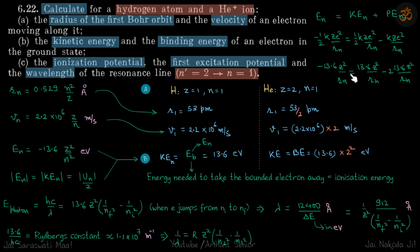The radius of the nth orbit is 0.529 n²/z angstrom, where 1 angstrom = 10⁻¹⁰ meter. The velocity of the nth orbit formula follows from this.